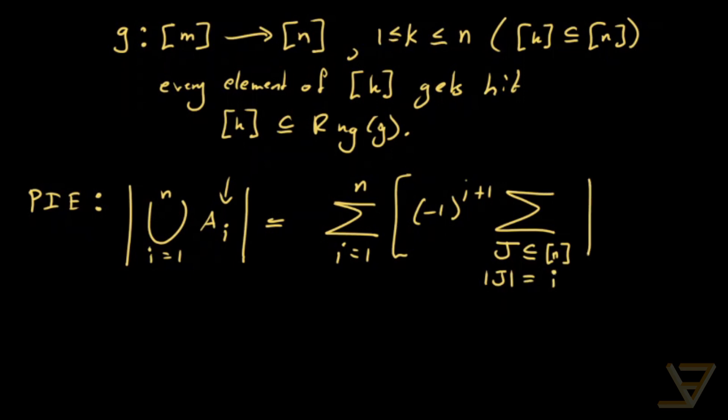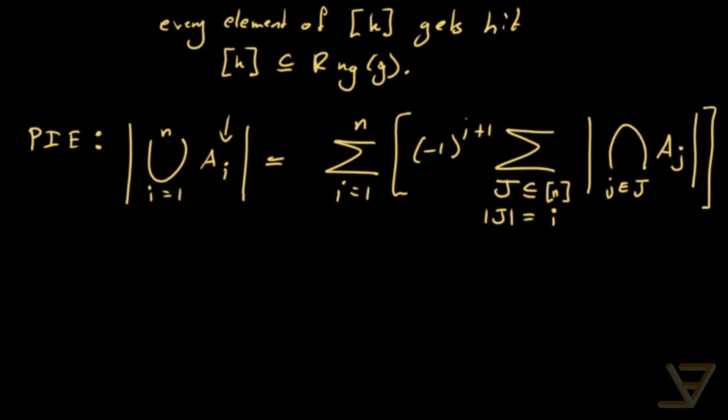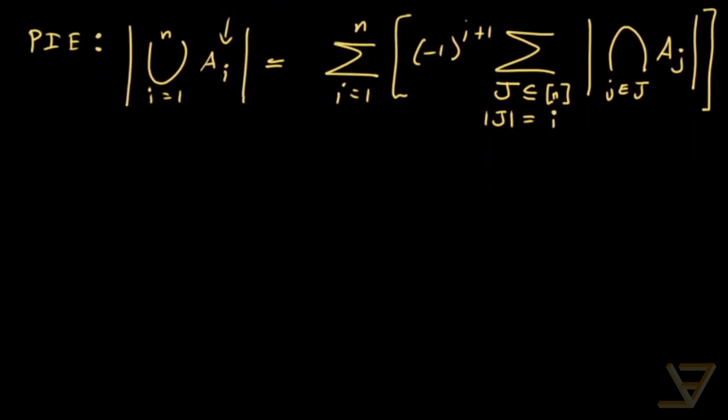And the sum adds of that are the intersection of the aj's where j, little j, is the element of big j.